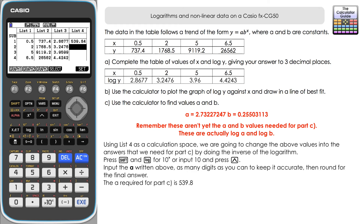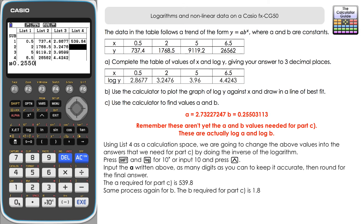Now let's find the inverse for B: Shift and 10 to the power of, with B equal to 0.255 and so on — use as many decimal places as possible to stay accurate. Press Execute and we get B approximately 1.7899 — almost 1.8. So to one decimal place, B is 1.8.